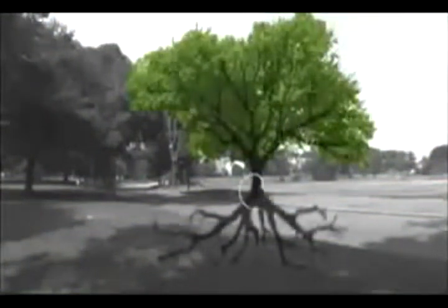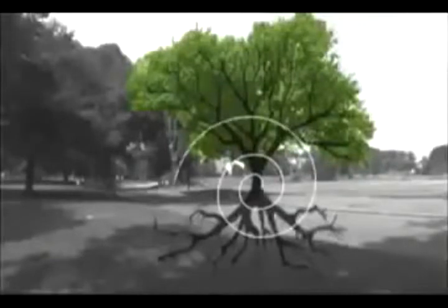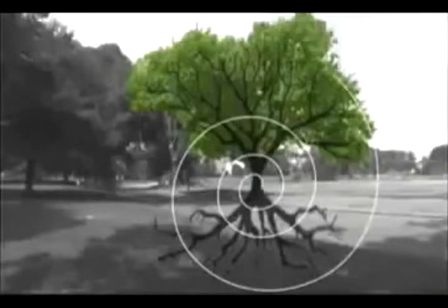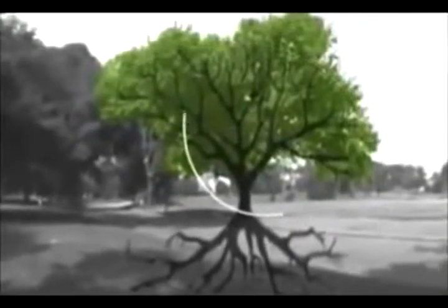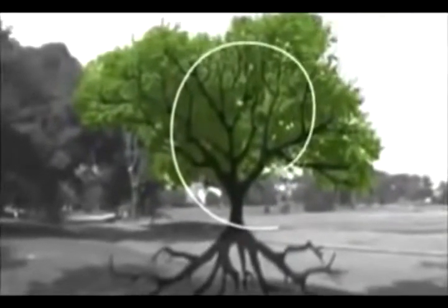The logarithmic spiral depicts growth and expansion in the universe. For example, if we look at the branching tendencies of a tree, we see that as time progresses, one spiral expands as the number of branches increases, and another spiral contracts as the circumference of branches decreases.